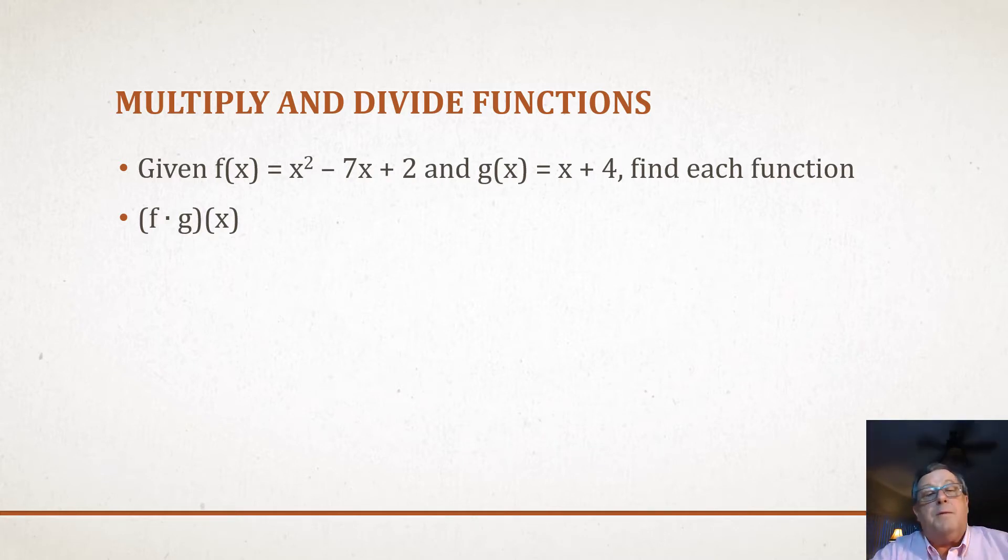We're just going to multiply those. I prefer to do these horizontally rather than vertically. I've got x² - 7x + 2, and we're going to multiply that by x + 4.